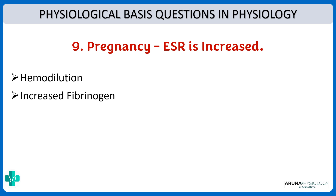The second reason is increased fibrinogen during pregnancy. Fibrinogen promotes rouleau formation by inhibiting the negative charge around the RBCs. Both hemodilution and increased fibrinogen favor rouleau formation and sedimentation — that is why ESR is increased in pregnancy.